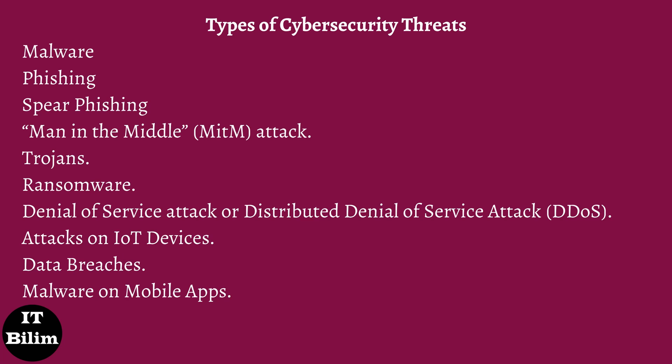Trojans: named after the Trojan horse of ancient Greek history, a trojan is a type of malware that enters a target system looking like something legitimate, such as a standard piece of software, but then releases malicious code once inside the host system. Ransomware: an attack that involves encrypting data on the target system and demanding a ransom in exchange for restoring the user's access. These attacks range from low-level nuisances to serious incidents, like the locking down of Atlanta's entire municipal government data in 2018. Denial of service (DoS) or distributed denial of service (DDoS) attack: an attacker takes over many — perhaps thousands — of devices and uses them to overload a target system, such as a website, causing it to crash.